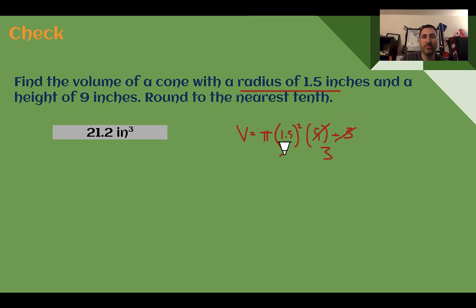1.5 squared is 2.25. 2.25 times 3 is 6.75. Then it says round to the nearest tenth. So let's use a calculator to multiply it out. 6.75 times pi is 21.2 when rounded to the nearest tenth.